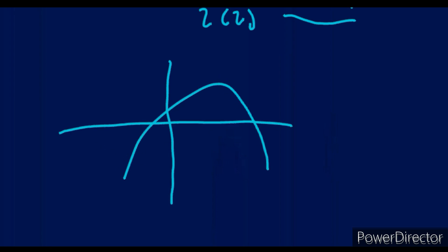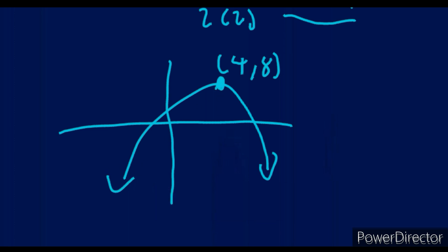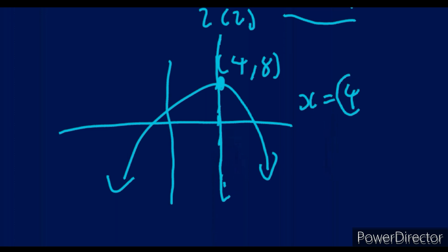Here is the last example before we go to the hyperbola. If they ask for the axis of symmetry of a graph with turning point (4, 8), the axis of symmetry is just the line that separates this into two equal parts. That line always cuts at the x-value of the turning point. So x equals 4, because x is always 4 no matter where you move on that vertical line.